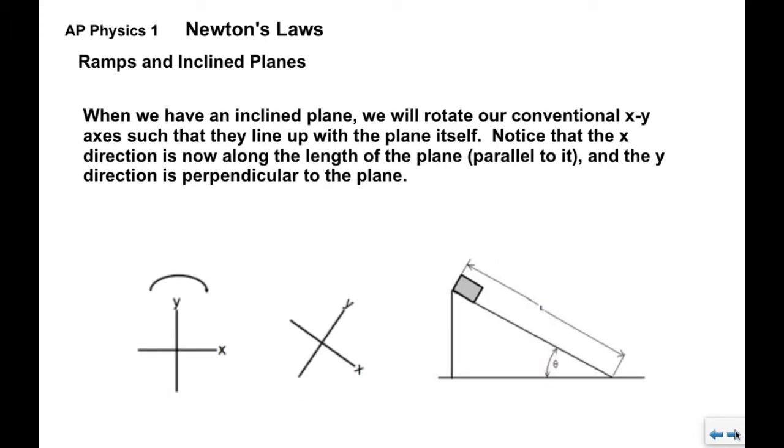So what we're going to do when we have an inclined plane is rotate our conventional x-y axes which are typically horizontal and vertical. We're going to rotate them so that they line up with the surface of the plane itself. Notice that the x-direction is now along the length of the plane or parallel to it, and the y-direction is perpendicular to it. If you turn your head sideways you can see x and y.